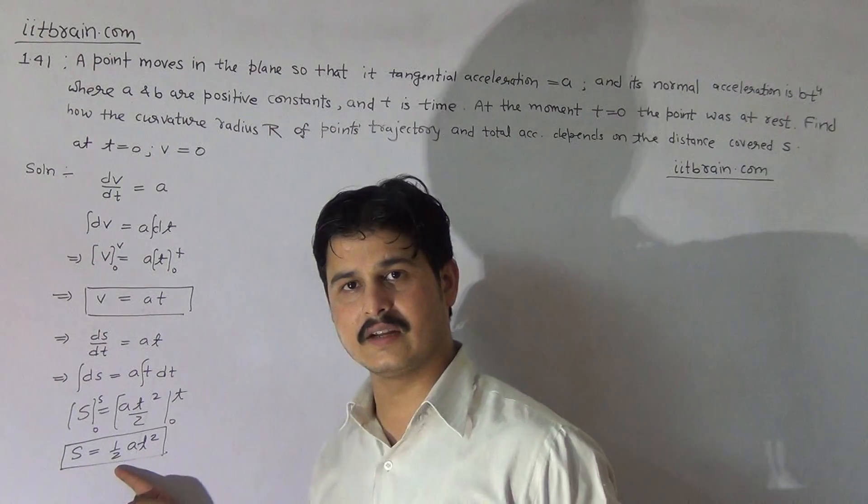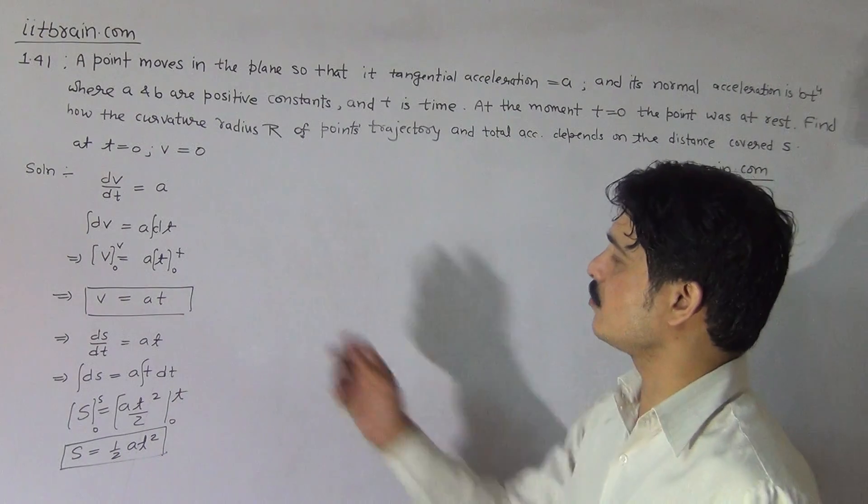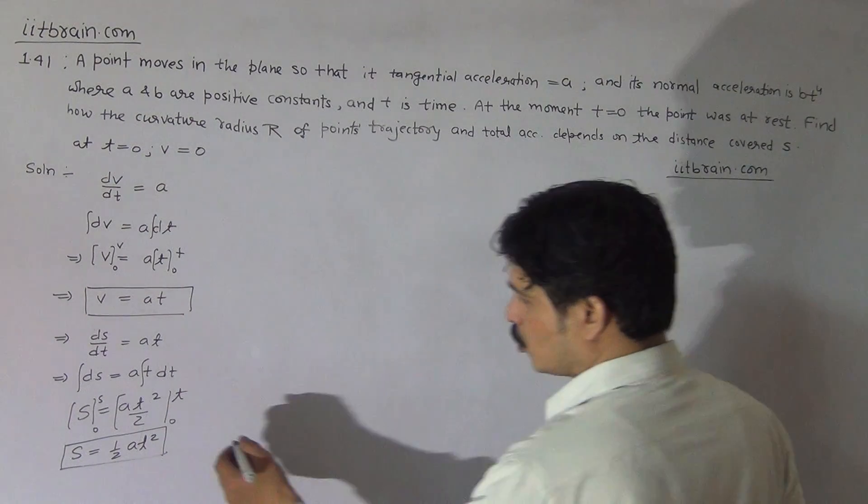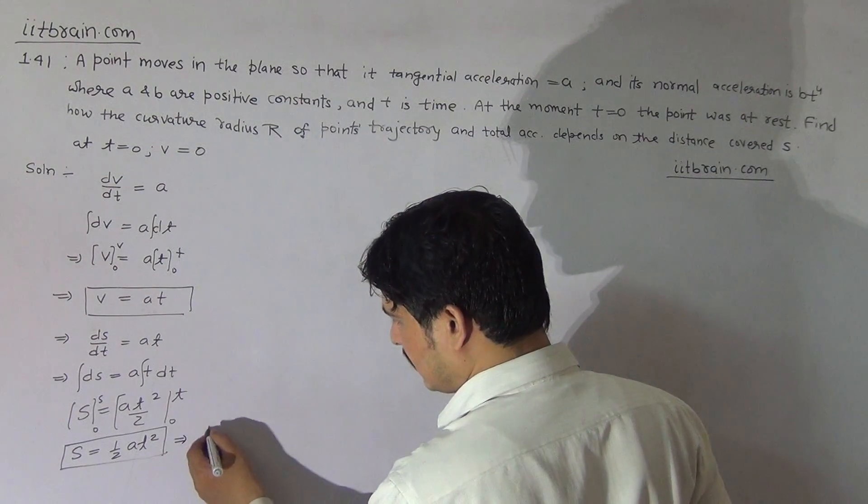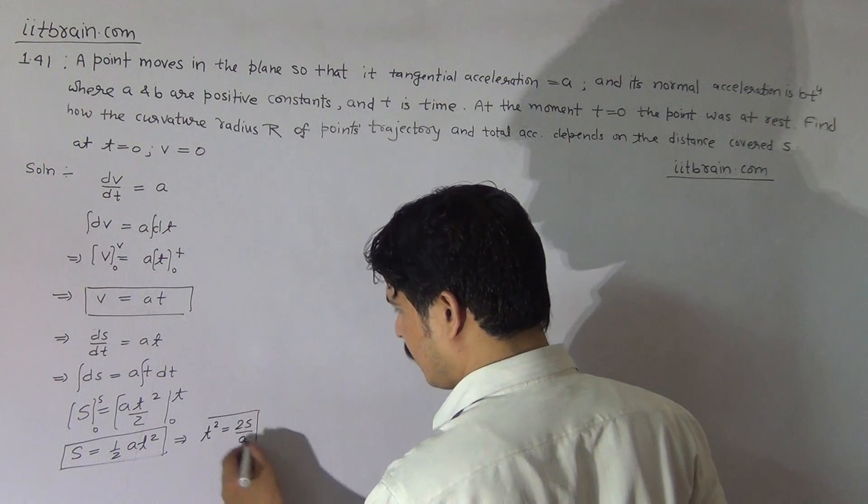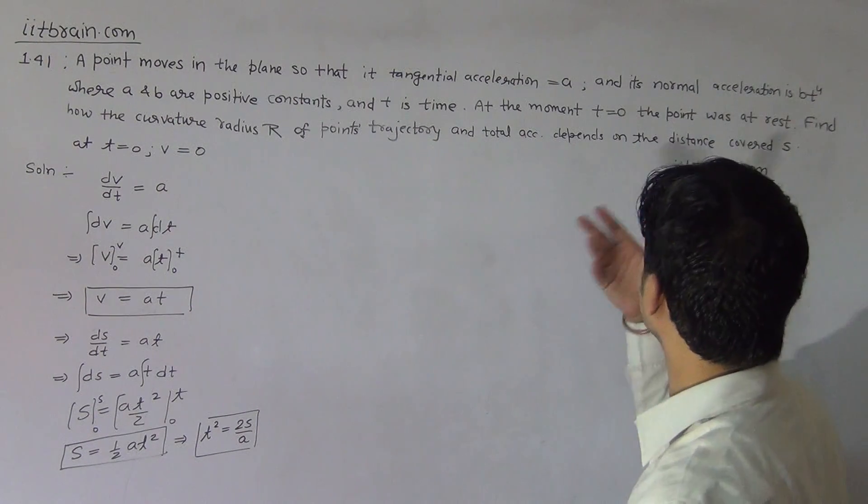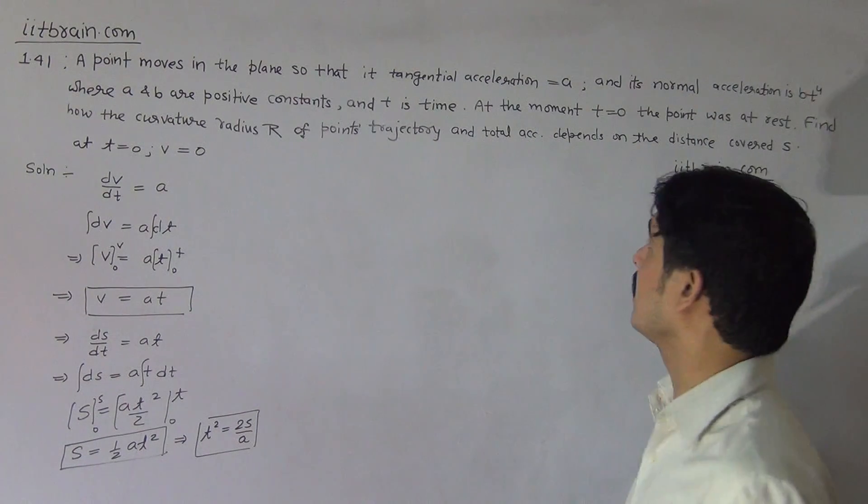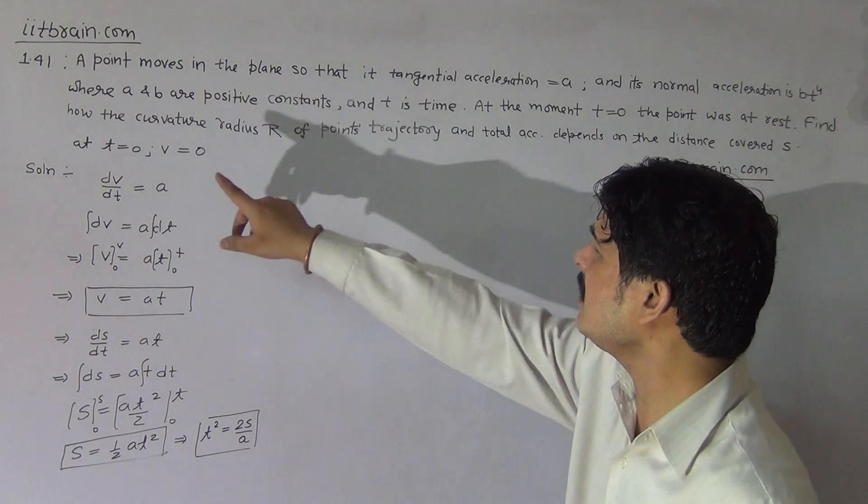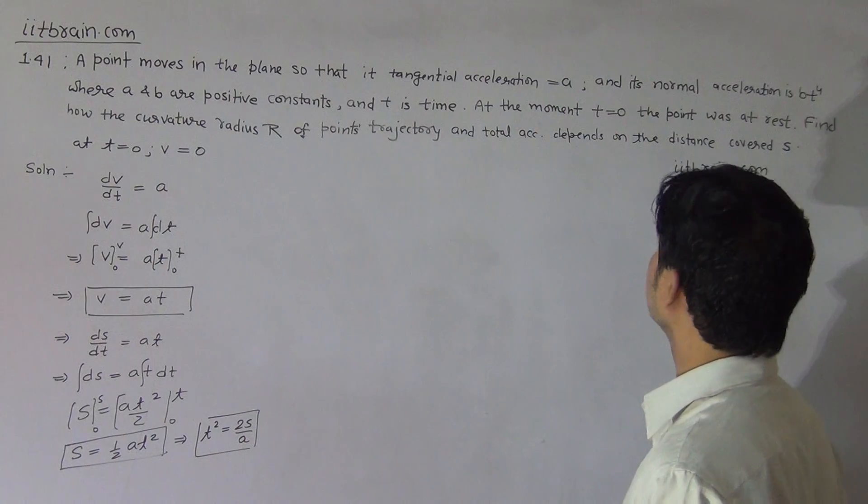The value of particle's distance is S equal to half At square. So we have S equals half At square and V equals At. By this equation, we get that t square can be taken as 2S by A. The question is to convert time to distance, so t square will be equal to 2S by A.